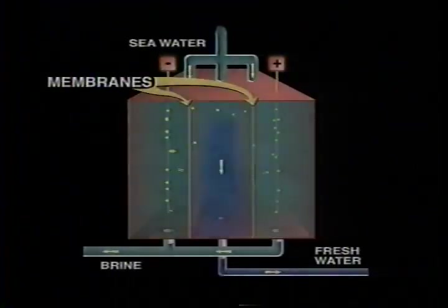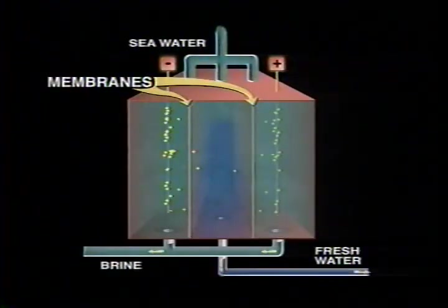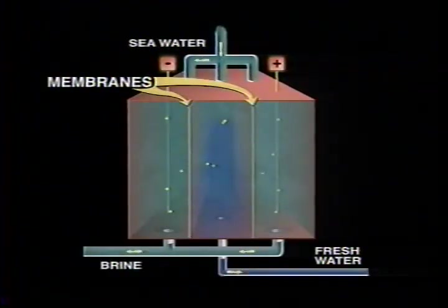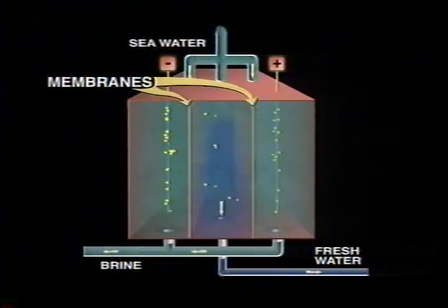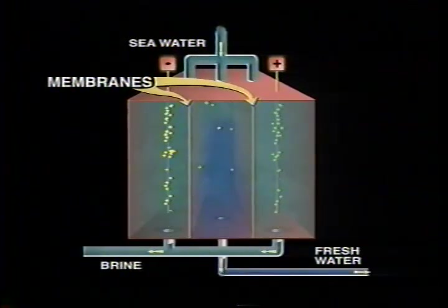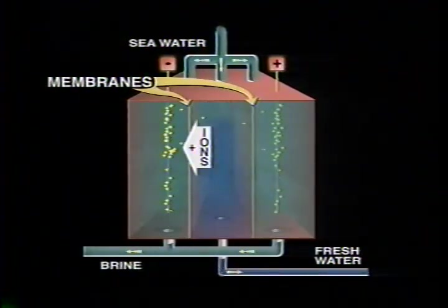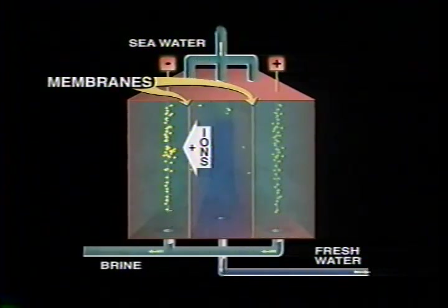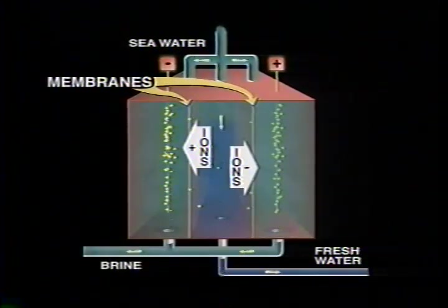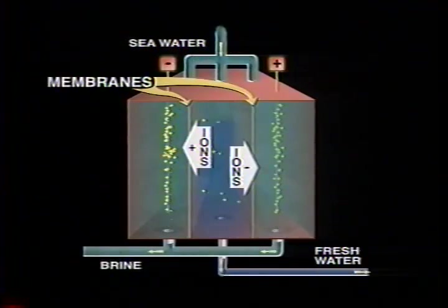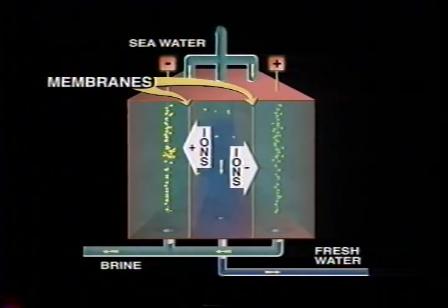A third method of desalination is electrodialysis. Two types of membranes are placed between pairs of electrodes. Positively charged ions, such as calcium and sodium, pass through the first membrane. Negatively charged ions, such as chloride and sulfate, pass through the second membrane, producing fresh water.